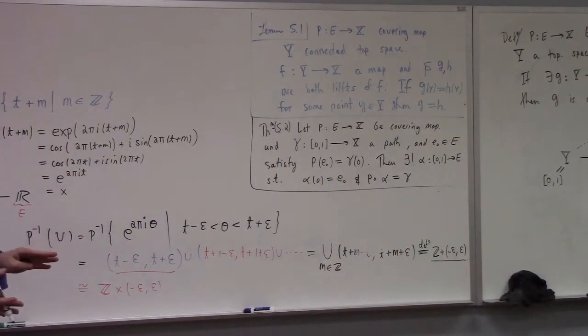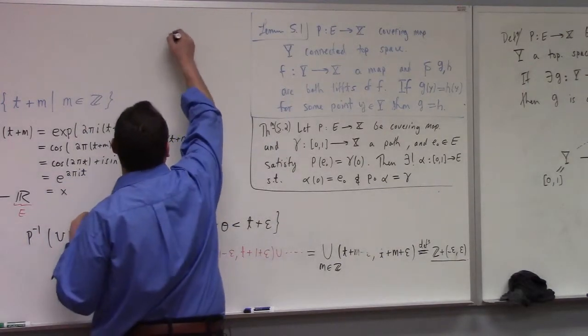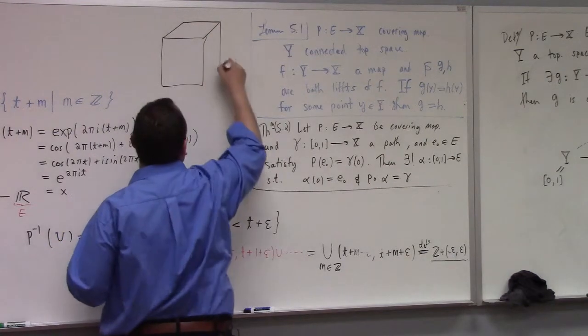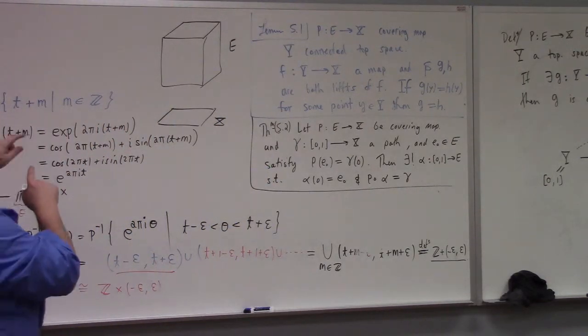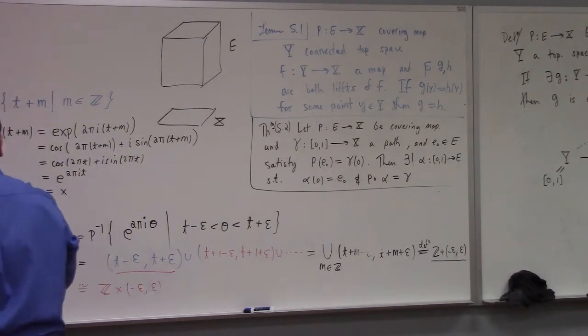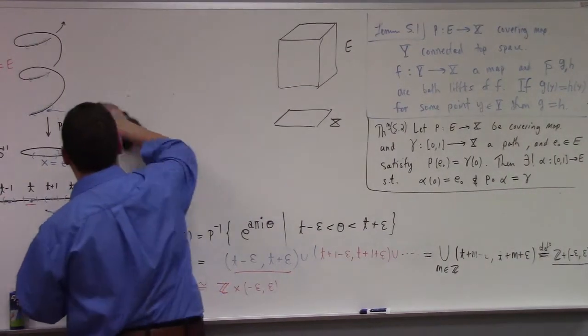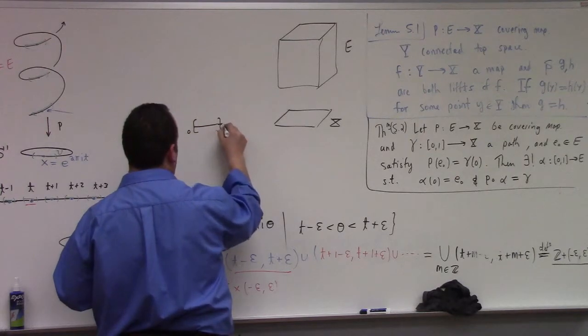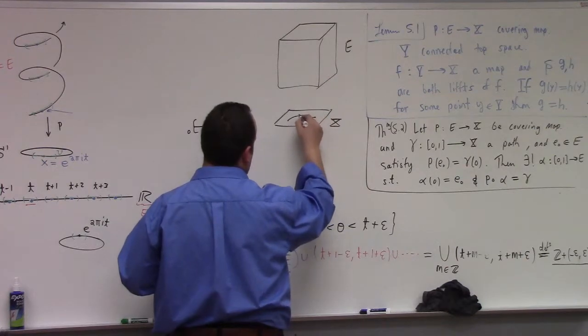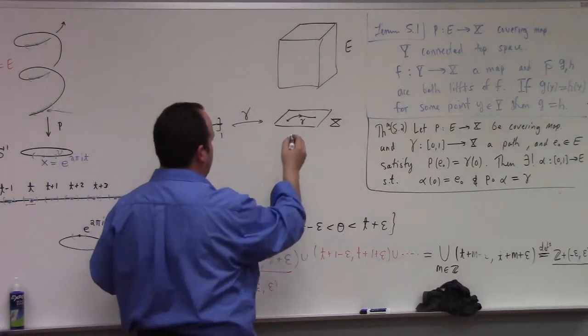I think it's worthwhile to try to draw a picture of this theorem even if we don't prove it. So what's the idea here? Covering map. I'm going to draw the covering space kind of like a cube, and I'm going to draw the space down here that we're covering like that. I'm supposing that γ from [0,1] is a path.